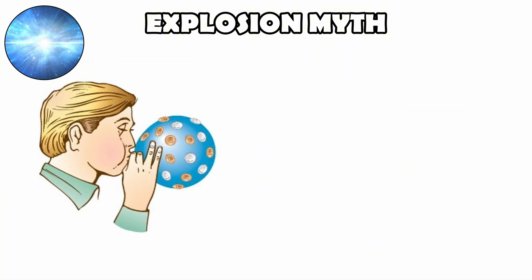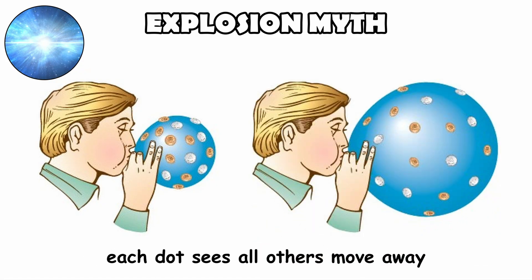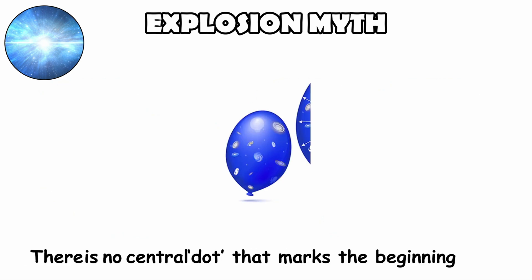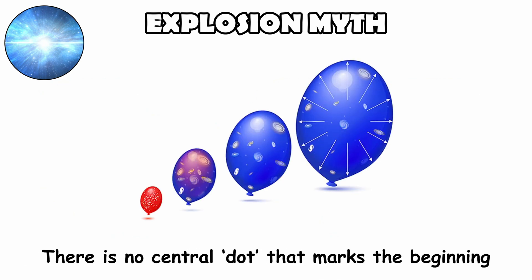Imagine dots on the surface of a balloon as it inflates. Each dot sees all others move away, and the more distant dots recede faster. There is no central dot that marks the beginning.